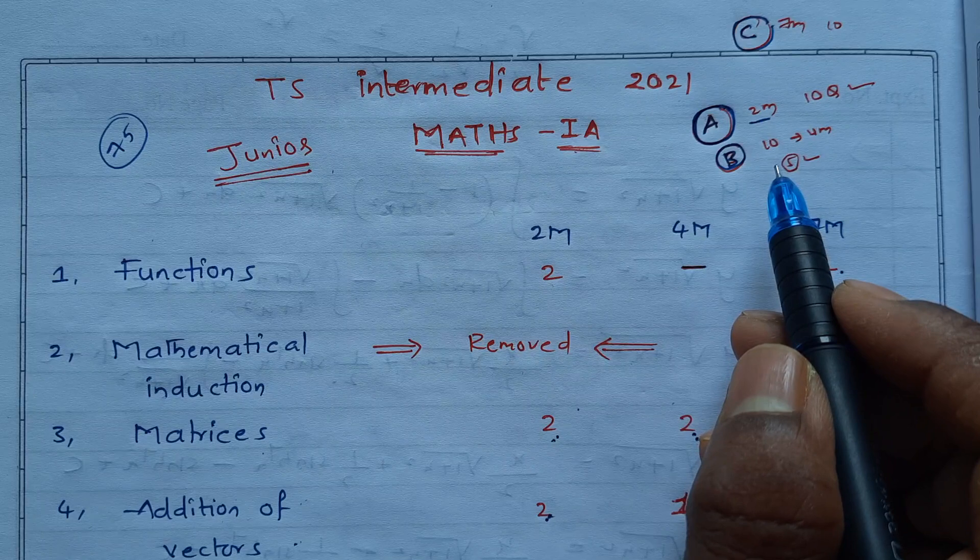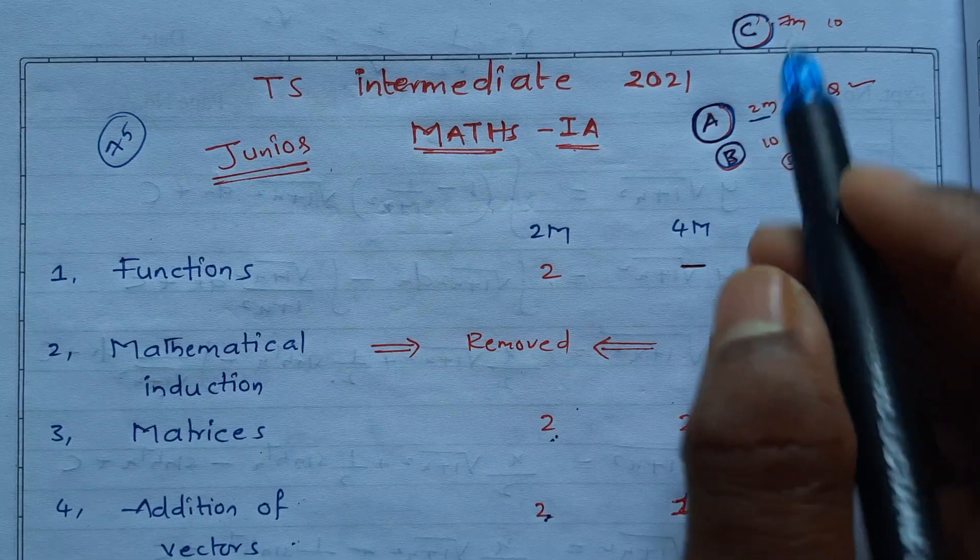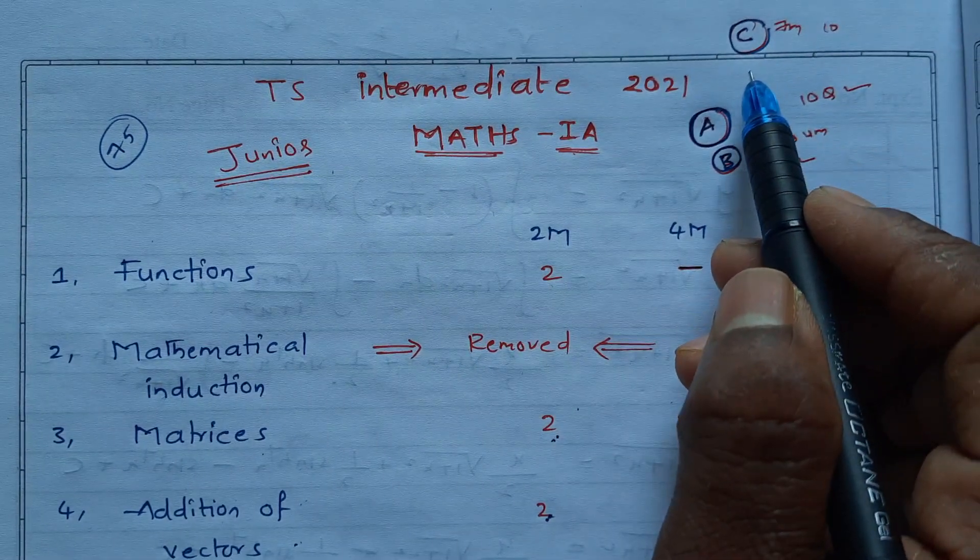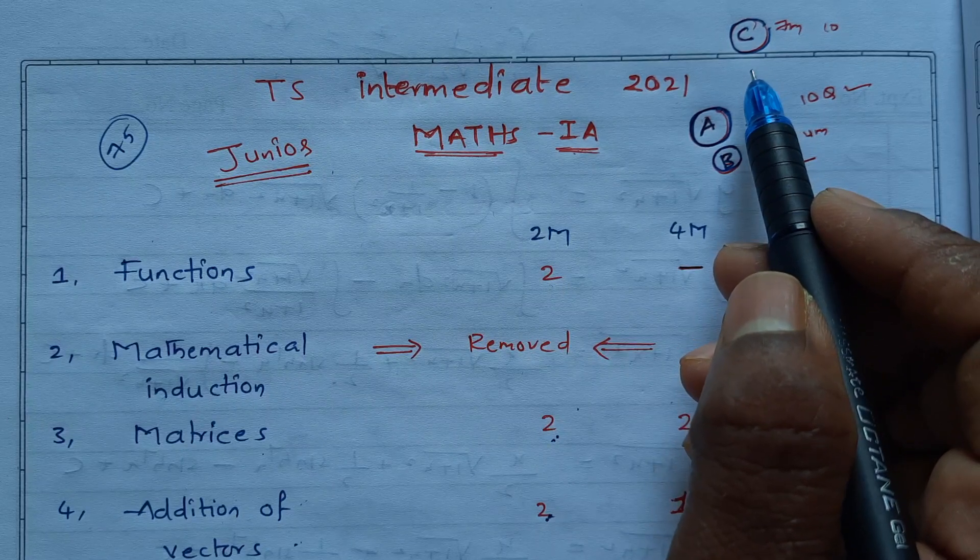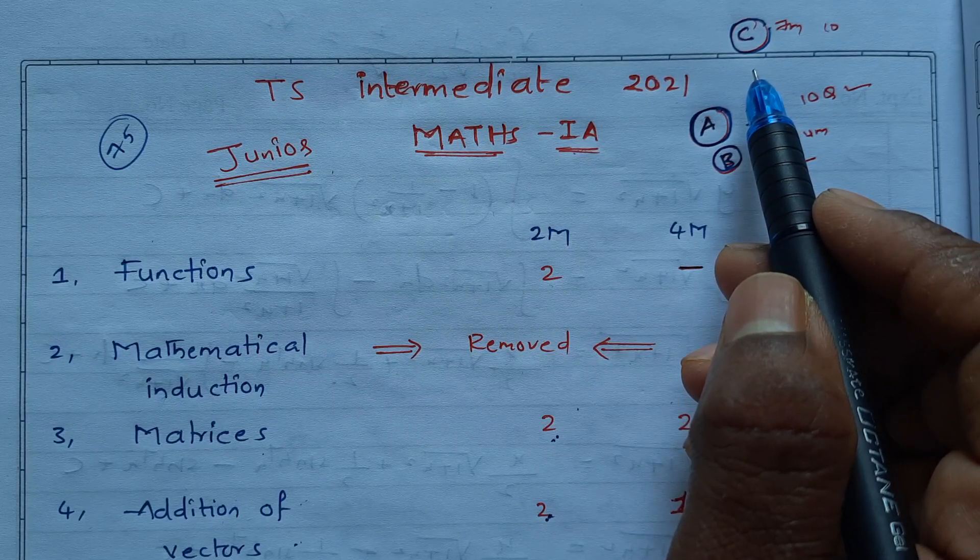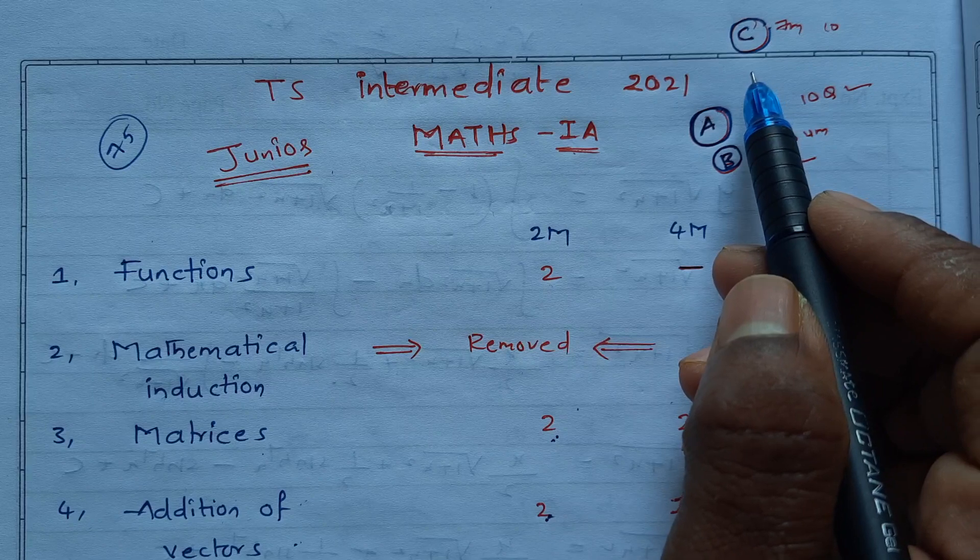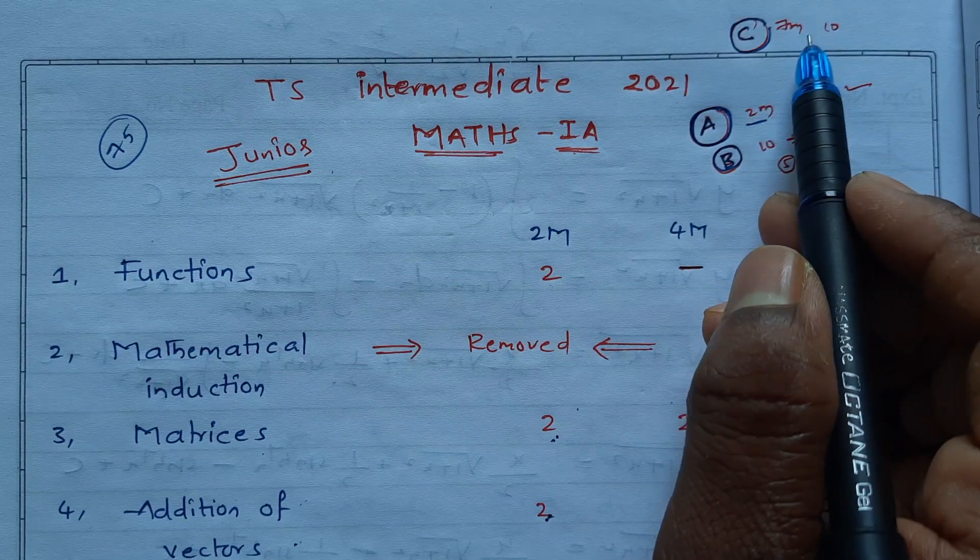Section C, same, so 10 questions out of which seven, five questions must be answered. Each question carries seven marks. Seven times five is 35. 35, 20, 20 equals 75 total.